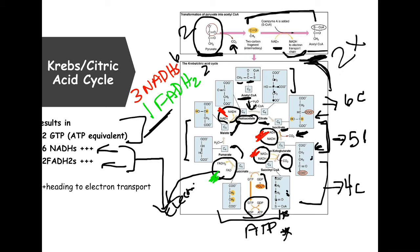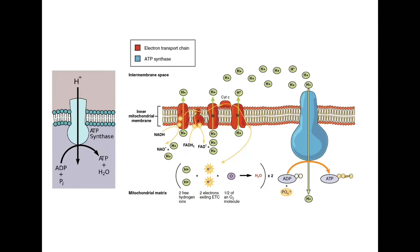Per glucose molecule, the Krebs cycle produces two ATP equivalents (GTP), with three NADs reduced and one FAD reduced per pyruvate. Multiplied by two for the two pyruvates, that's six NADs reduced, two FADs reduced, and two ATP equivalents total.